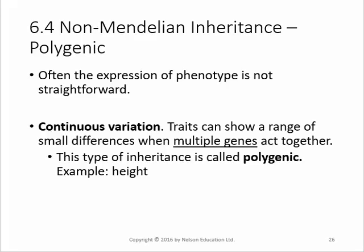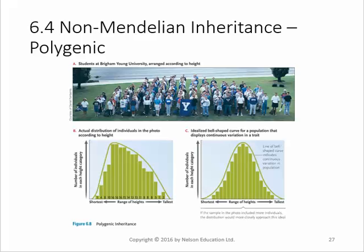Polygenic inheritance is the most straightforward one. The expression of the phenotype isn't straightforward in that it takes multiple genes to produce it. These are the traits that have continuous variation. For example, height — there's no one gene that contributes to height, it's polygenic. That's why you don't have people either five foot or six foot; that would be Mendelian. The fact that you have people at every increment between and beyond makes it polygenic. Here's a distribution of people by height, which proves that it is polygenic.